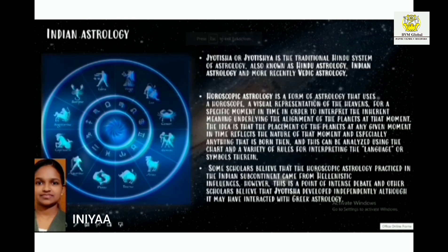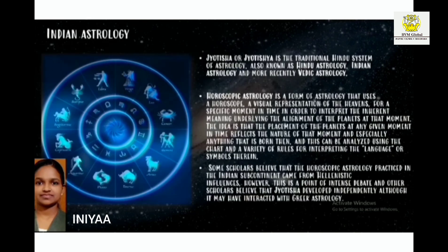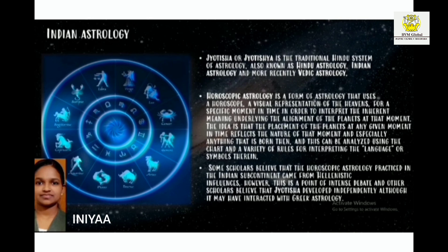Indian Astrology: Jyotisha is the traditional Hindu system of astrology. Horoscopic astrology is a form of astrology that uses a horoscope — a visual representation of the heavens — for a specific moment in time in order to interpret the inherent meaning underlying the alignment of the planets at that moment. The Vedas are a large body of religious texts originating in ancient India.